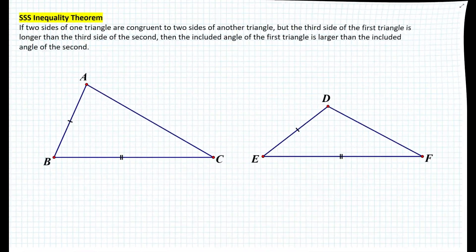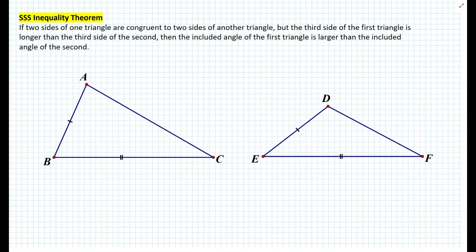The SSS inequality theorem states the following: if two sides of one triangle are congruent to two sides of another triangle, but the third side of the first triangle is longer than the third side of the second, then the included angle of the first triangle is larger than the included angle of the second. Let's prove this theorem now.